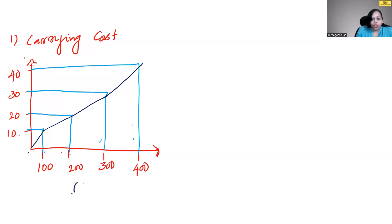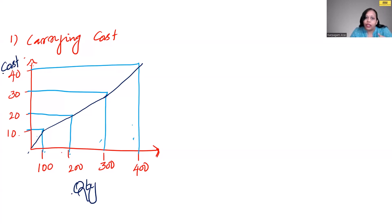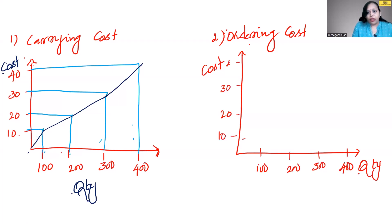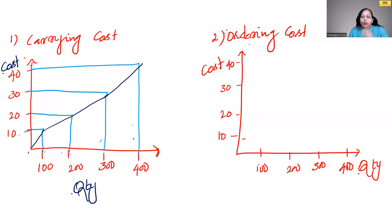We take the quantity and the annual cost for carrying it. If you are taking it for monthly, then it's a monthly carrying cost. For ordering cost also, we take quantity and the annual cost. We are mapping cost against quantity. At a specific point, it is up to you to take the quantity you need. The more the quantity, the more is the carrying cost.